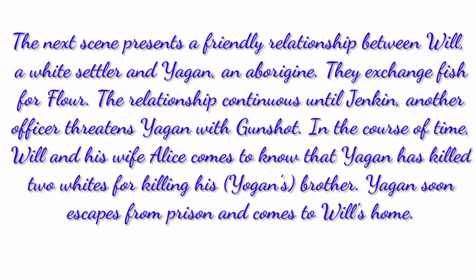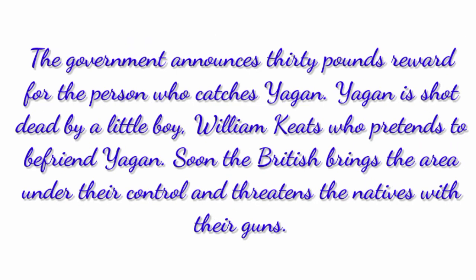The next scene presents a friendly relationship between Will, a white settler, and Yagen, an aborigine. They exchange fish for flour. The relationship continues until Jackins, another officer, threatens Yagen with a gunshot. In course of time, Will and his wife Alice come to know that Yagen has killed two whites for killing his brother. Yagen soon escapes from prison and comes to Will's home. The government announces a 30-pound reward for the person who catches Yagen. Yagen is shot dead by a small boy, William Keats, who pretended to befriend Yagen.